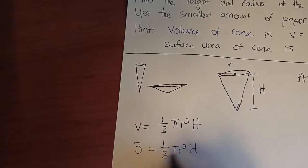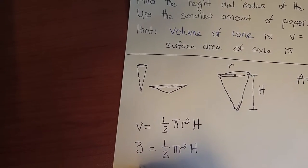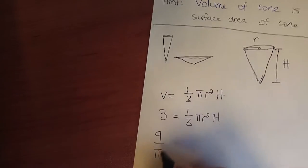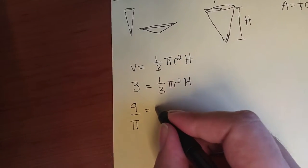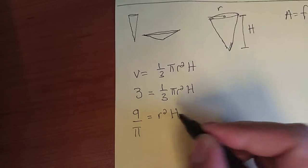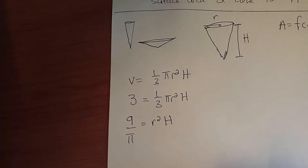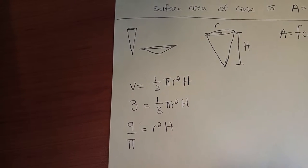Cross multiply, divide by π, we get 9/π = r²h. Now, our choice. This is where the choice happens. Do we isolate for h, or do we isolate for r?